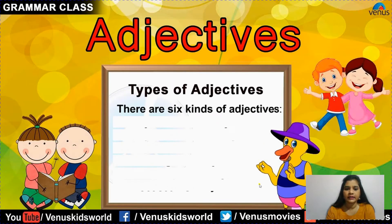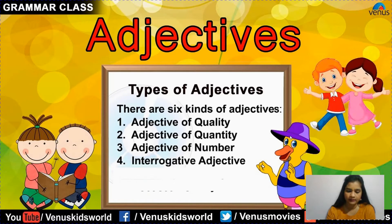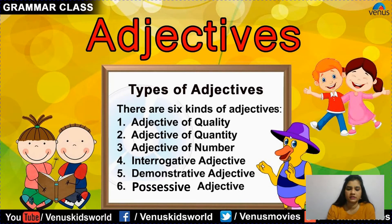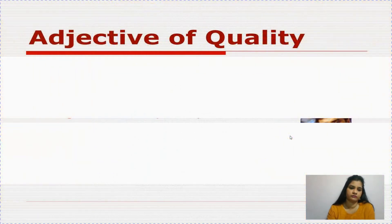Here there are different types of adjectives. We will read six kinds of adjectives: adjective of quality, adjective of quantity, adjective of number, interrogative adjective, demonstrative adjective, and the last one is possessive adjective. We will read them one by one.